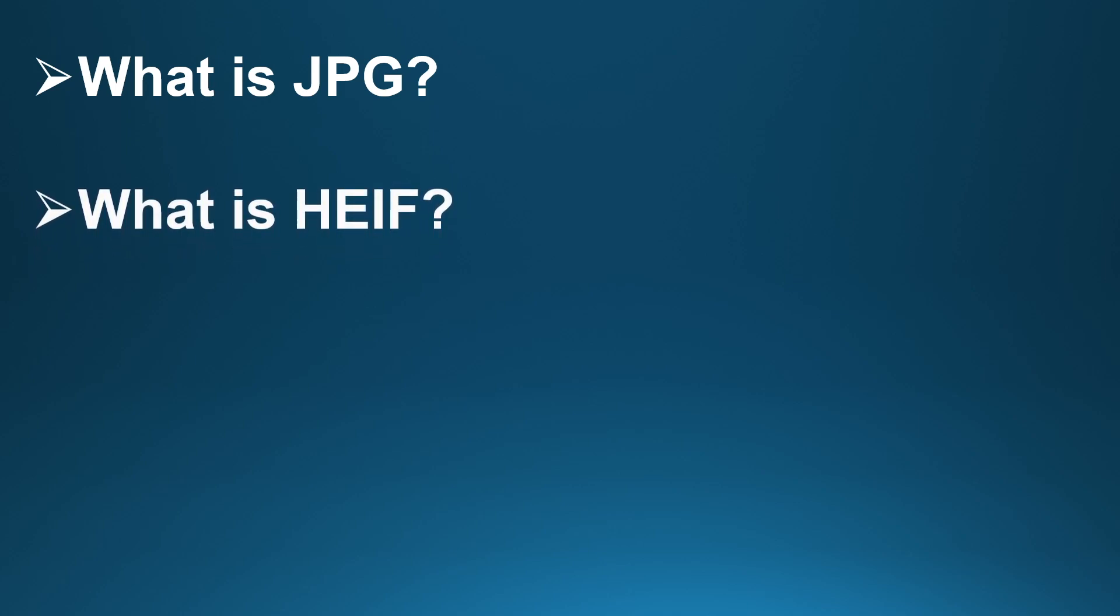What is JPG? Short for Joint Photographic Experts Group. This format has been around since the 1990s and is the most widely used image format on the planet. JPG is known for good compression, decent quality, and compatibility with almost every device, app, and website. But it uses lossy compression, which means some image quality is sacrificed to reduce file size.